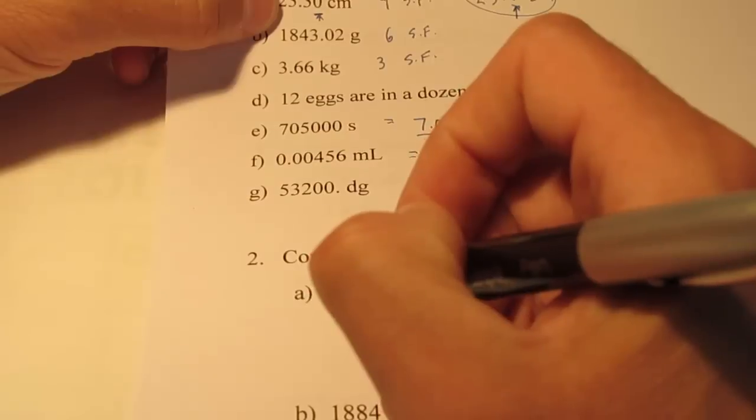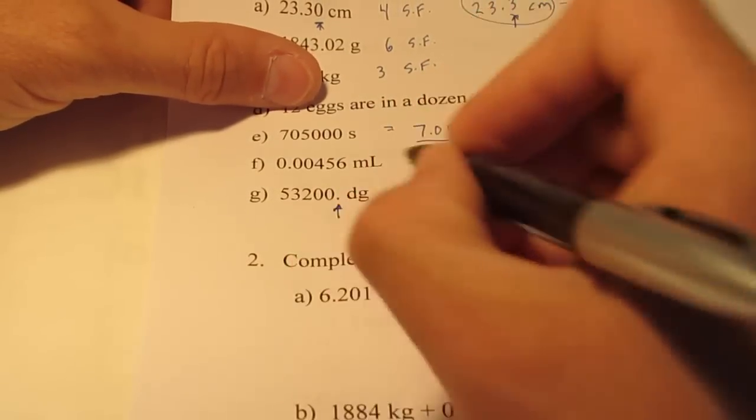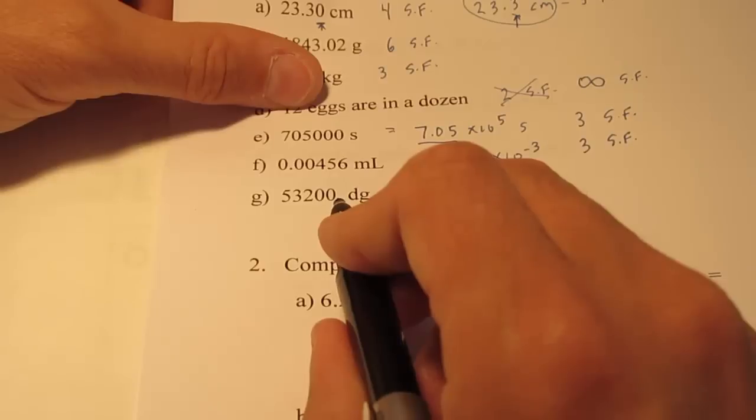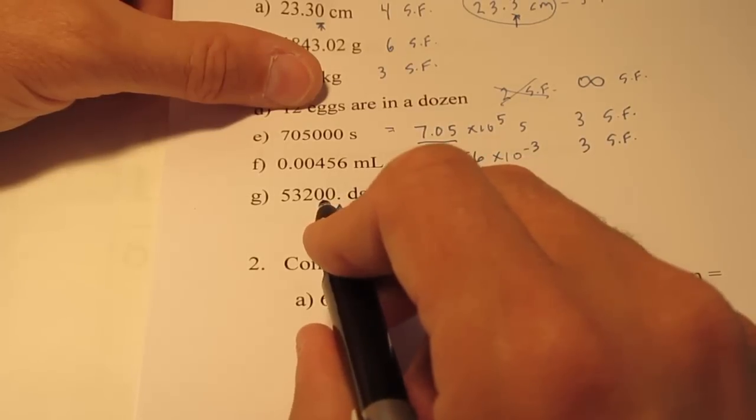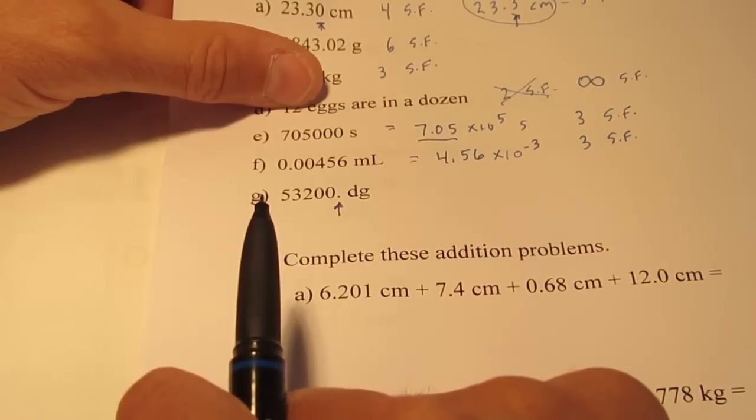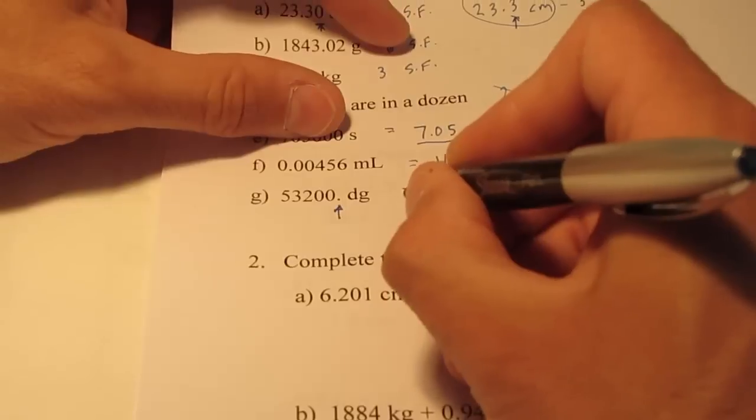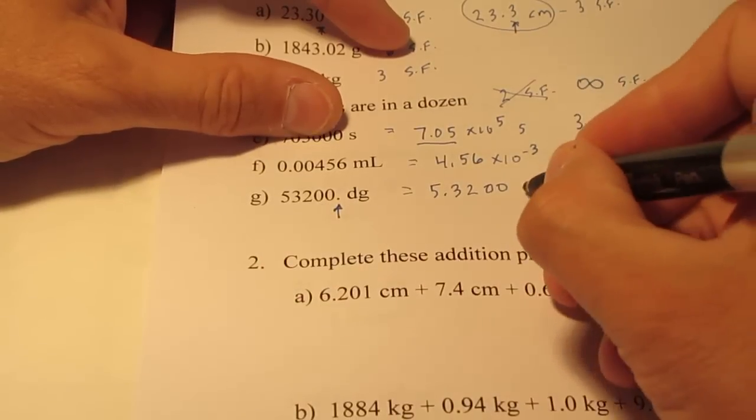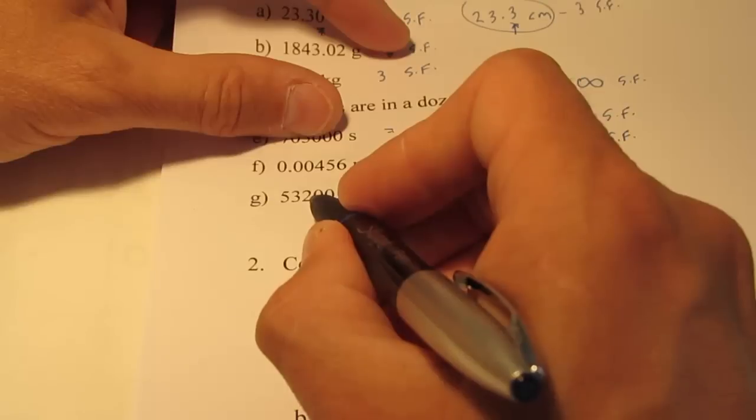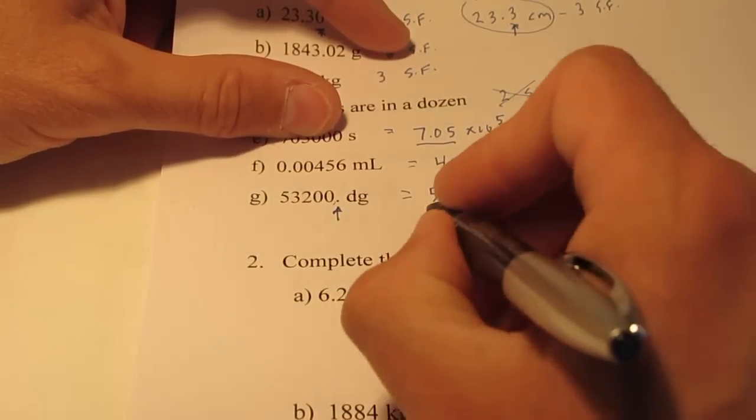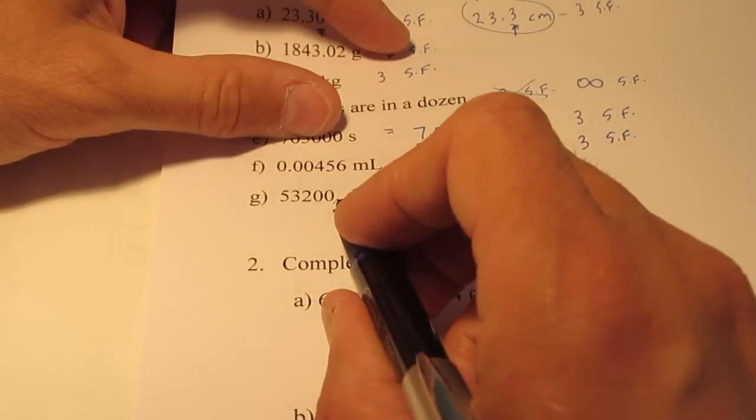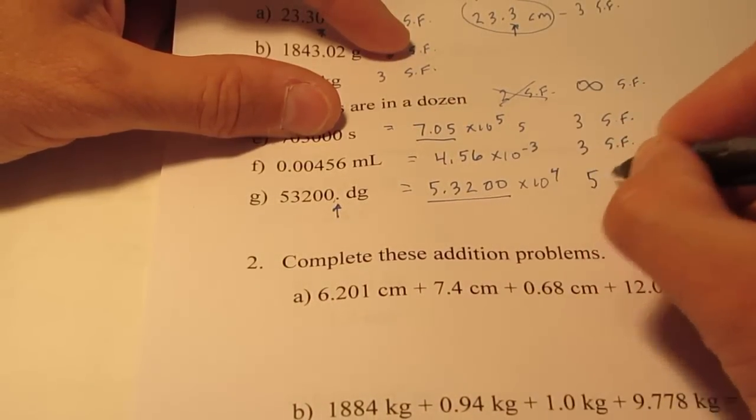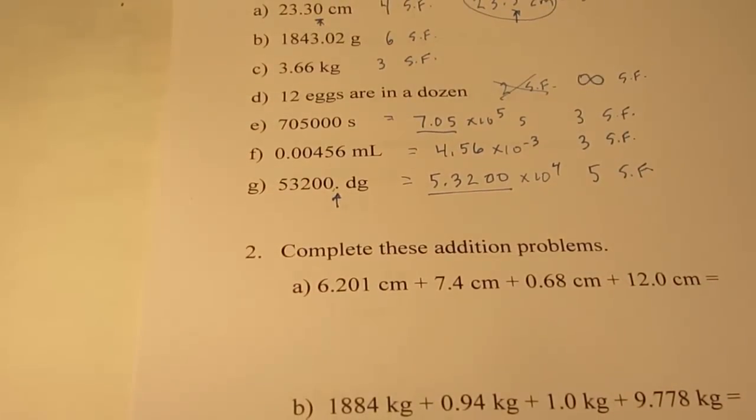Now, letter G, well, we have a decimal right here at the end. And that decimal tells you that the person that made that measurement intends the zeros that come before that decimal to be measured values. They are significant. So, if I were to rewrite this in scientific form, I would have to write it as 5.3200 times 10 to the 1, 2, 3rd, times 10 to the 4th. So, it's intended, when I put that decimal there at the end, that these zeros before it are significant. So, this would have 1, 2, 3, 4, 5 significant figures.